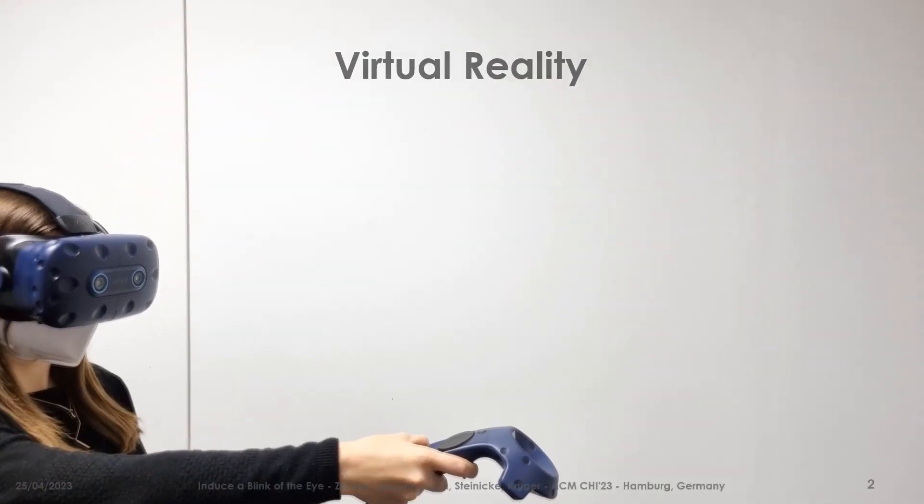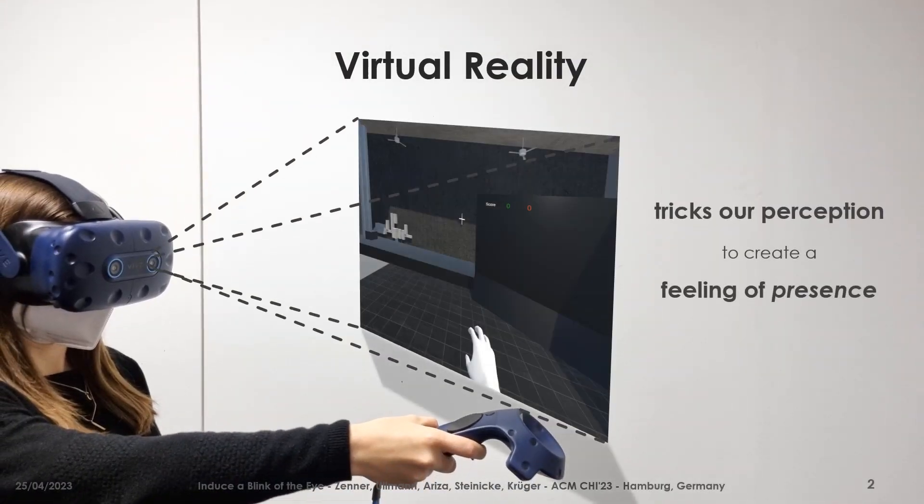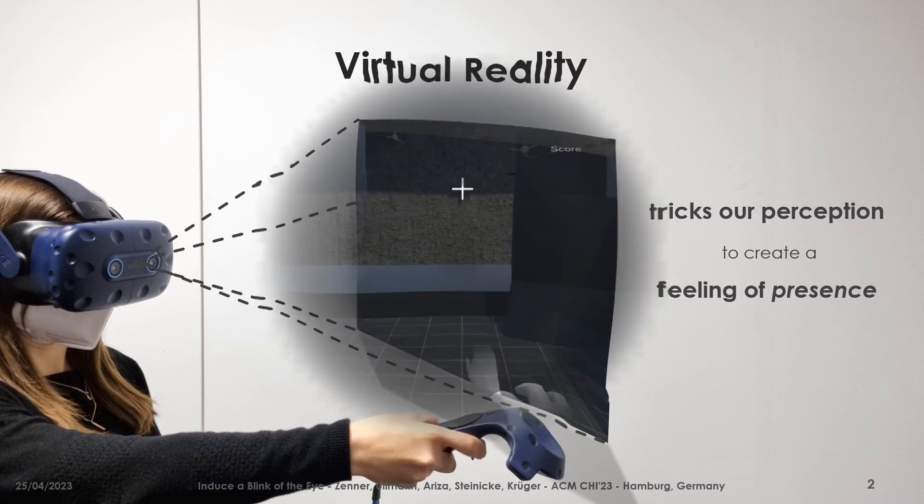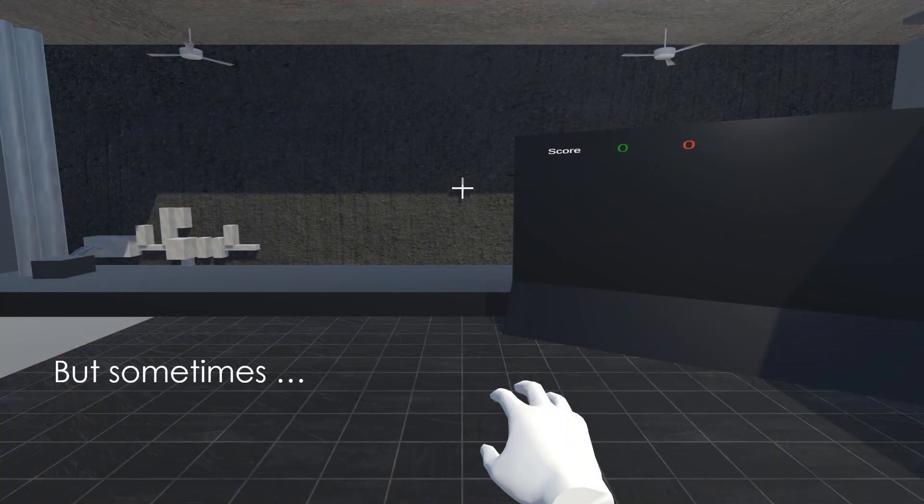Virtual reality is a technique that simulates a virtual environment to us by stimulating our various biological sensors in ways that make us experience a sense of presence. As such, virtual reality is tuned to trick our perception. Yet sometimes, also our perception can trick us.